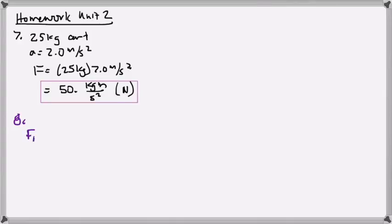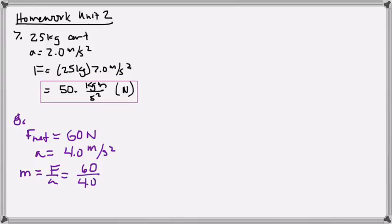Next problem, number 8. You have a net force of 60 newtons and acceleration of 4.0 meters per second squared. So to get the mass, that is just going to be the force divided by the acceleration. And so we're going to get 60 divided by 4.0, which is 15 kilograms.